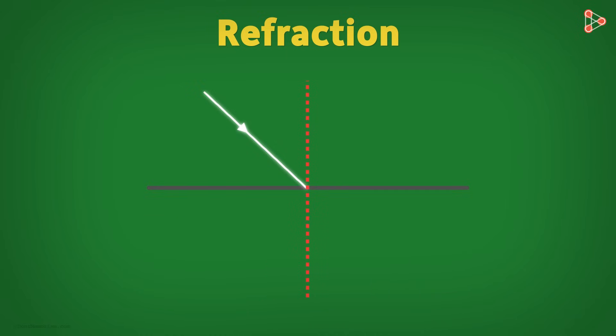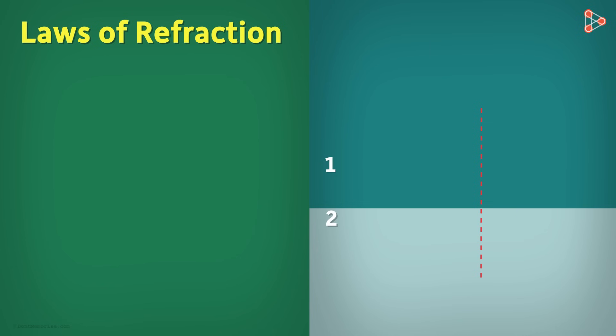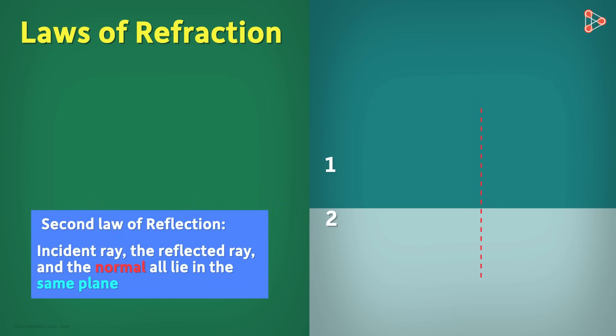Note that the light is incident obliquely on the surface. When the incident light is perpendicular to the surface, it does not change its direction. There are two laws of refraction. Among them, the first one is same as the second law of reflection.